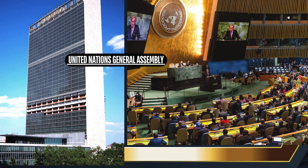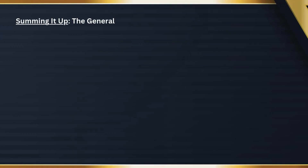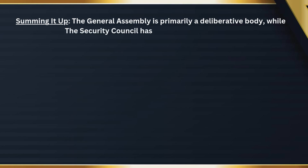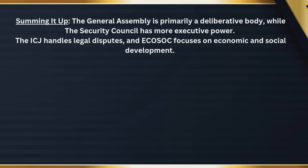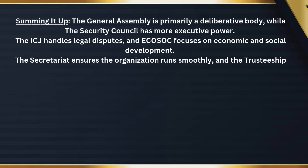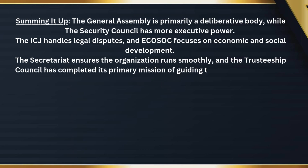In summary: the General Assembly is primarily a deliberative body, while the Security Council has more executive power. The ICJ handles legal disputes, and ECOSOC focuses on economic and social development. The Secretariat ensures the organization runs smoothly, and the Trusteeship Council has completed its primary mission of guiding trust territories to self-governance.